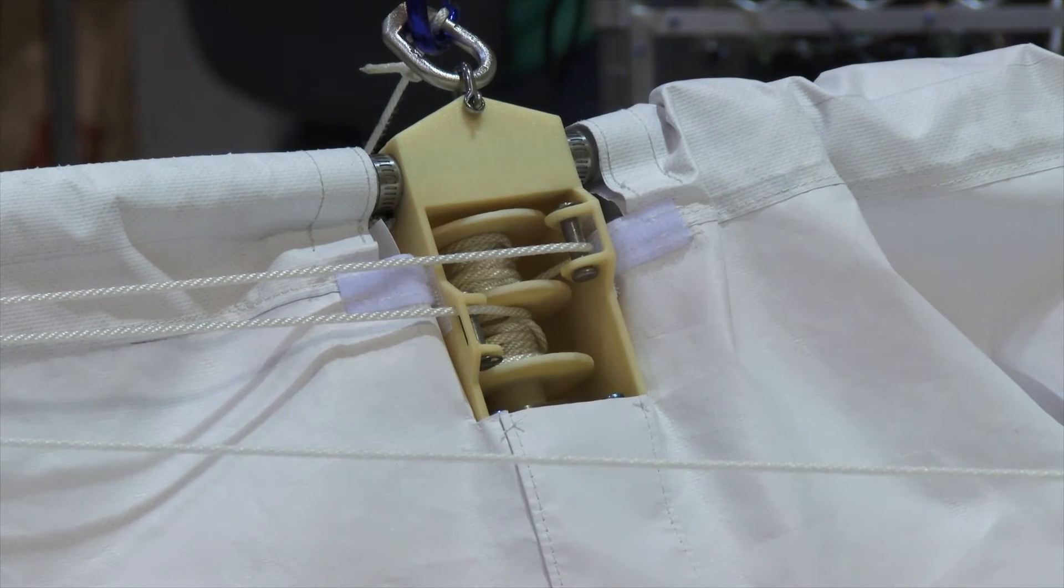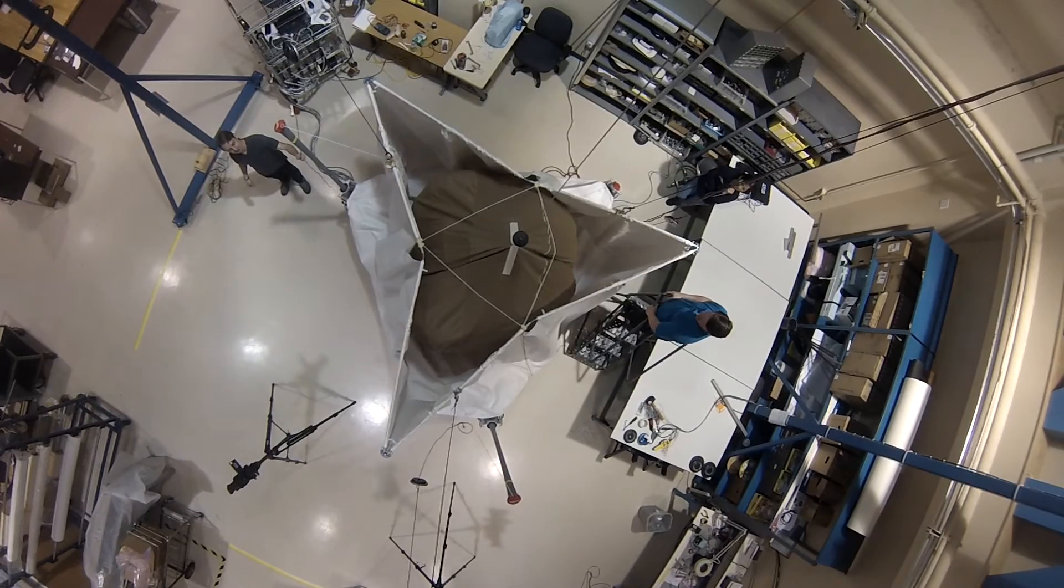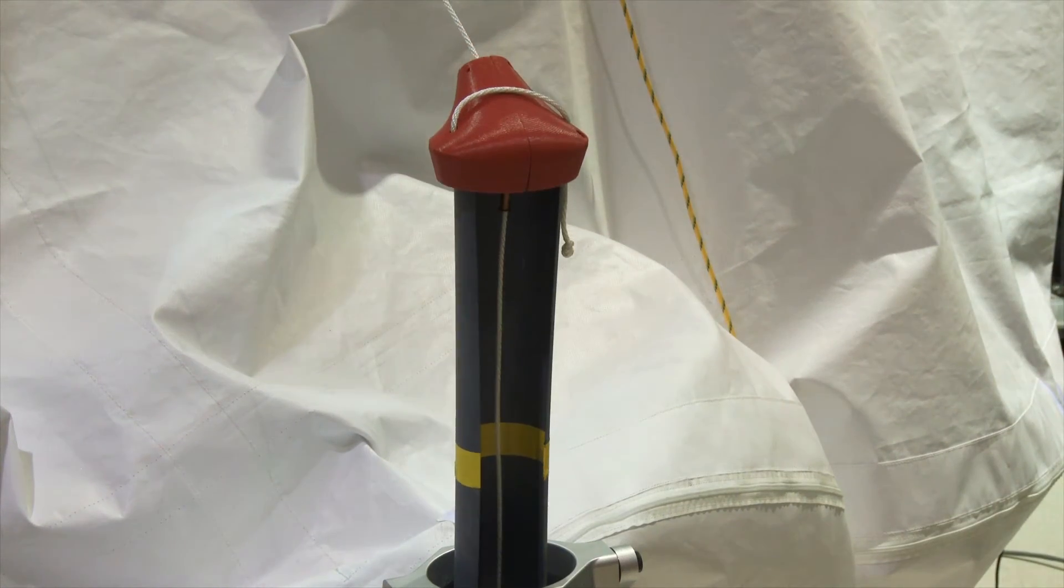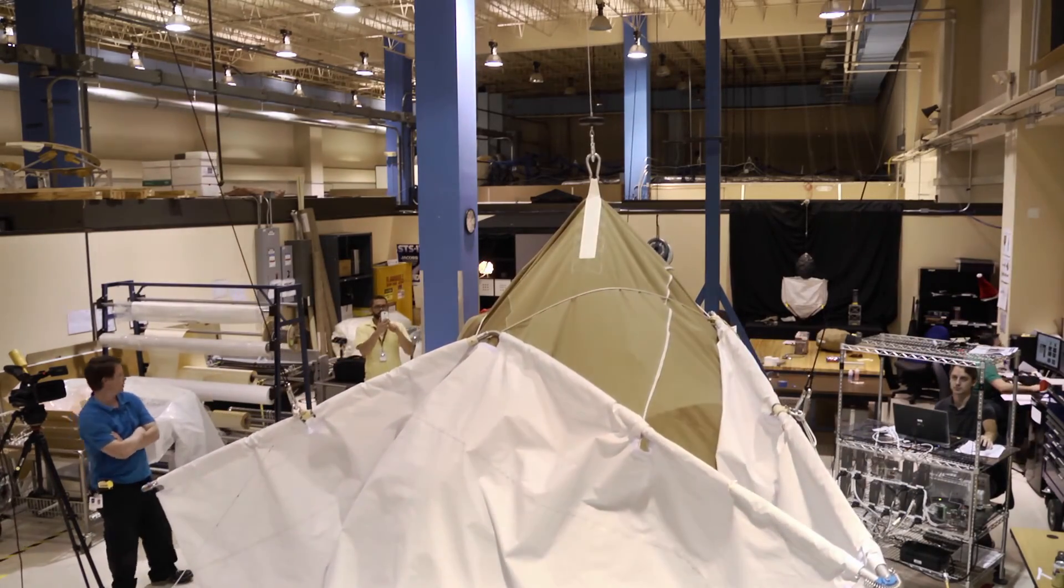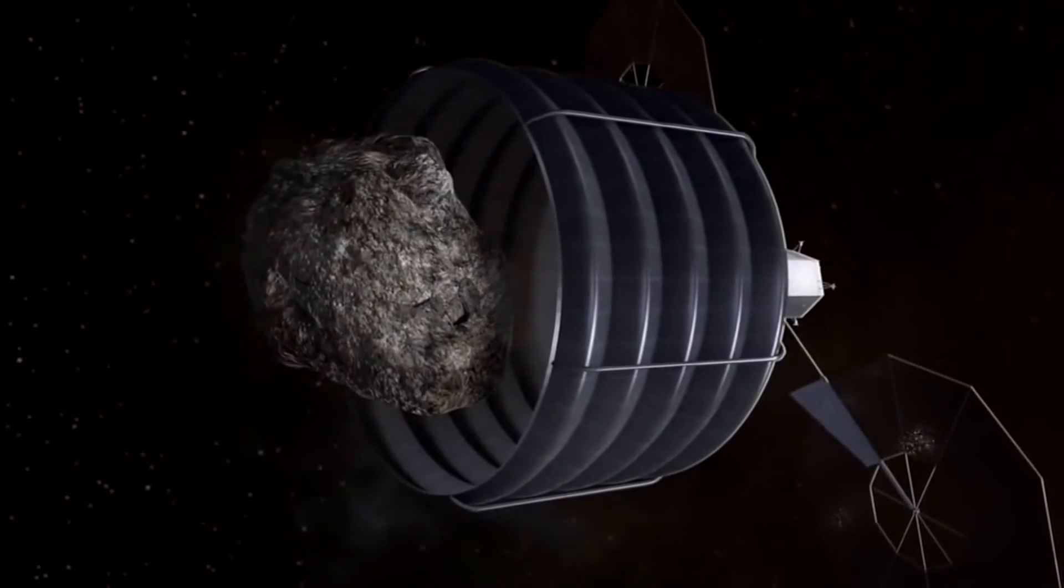...then there's a special bag closure mechanism that closes up the open end of the bag and allows the tether system to retract the closed bag and cinch it down tight against the capture mechanism and ultimately the spacecraft to secure it tightly for transport.